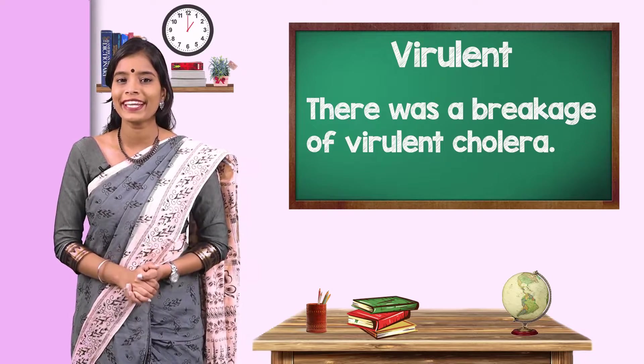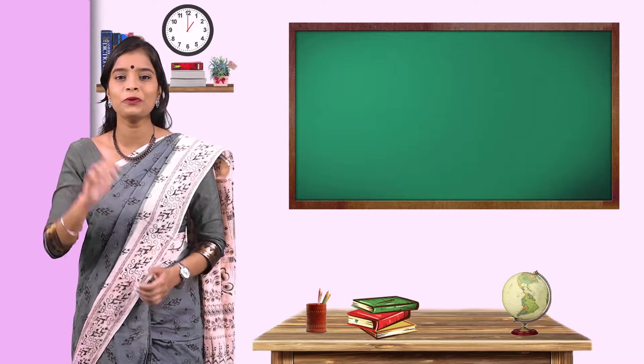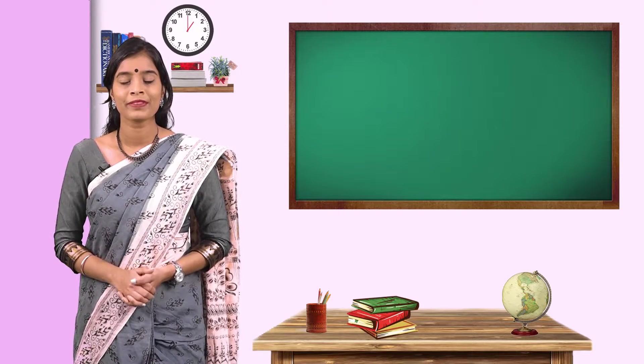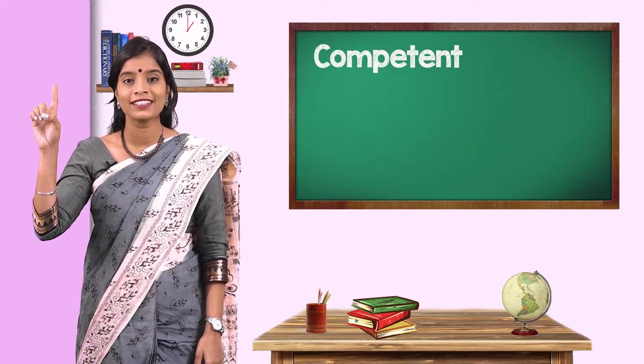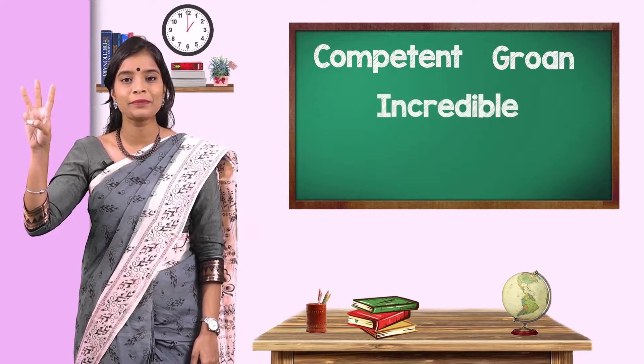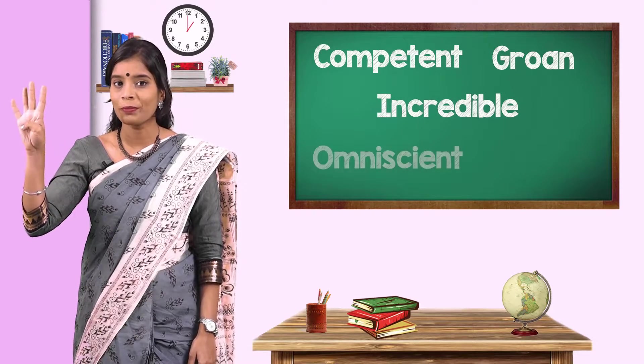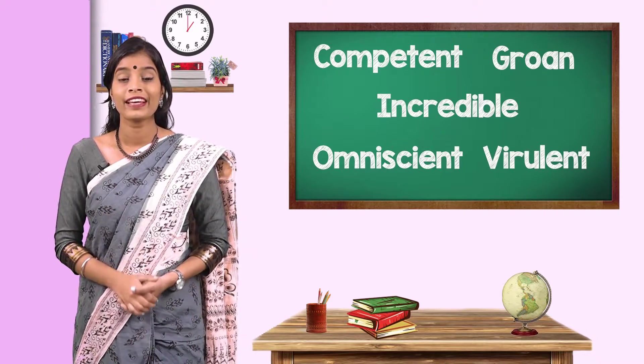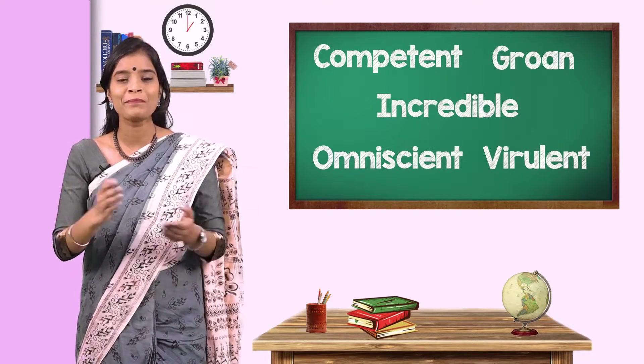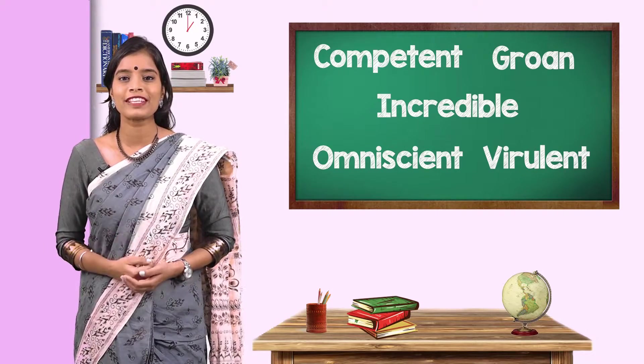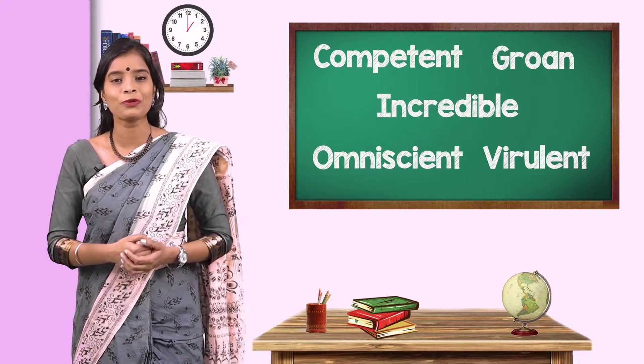So children, today we learnt five new words. Let's revise them. Competent. Grown. Incredible. Omniscient. Virulent. I hope you remember these words and I hope that you have made a note of these words in your notebook.